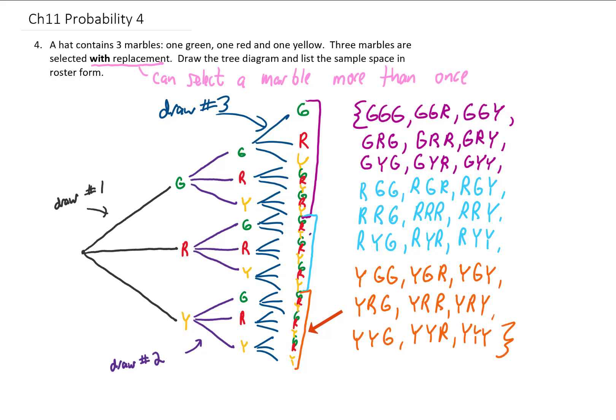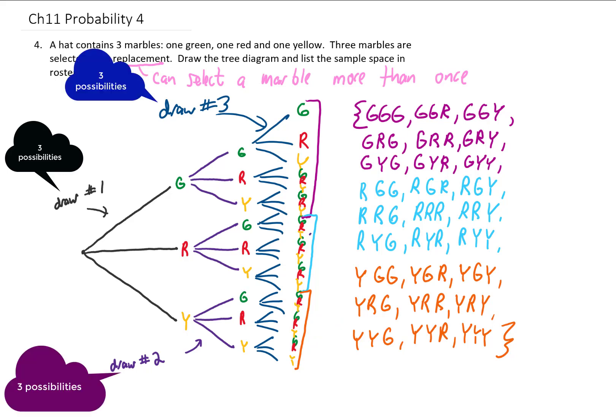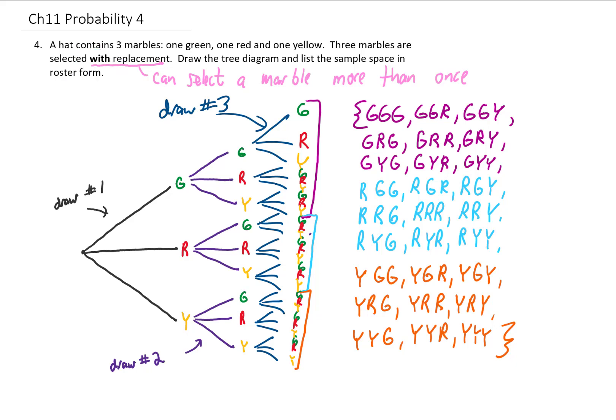Okay, we did it. Those are the 27 points in our sample space. We should expect 27, of course, because we had three possible options for each of our three draws. That's 3 times 3 times 3, which is 27. Alright, we did it. Let's never speak of this again. Let's move on to the next problem. I'll see you there.